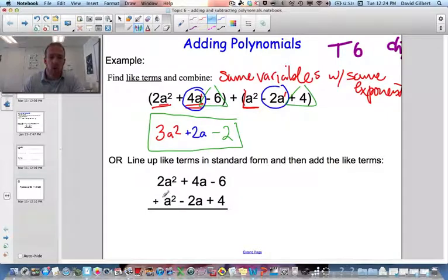So here you add 1 and 2 is 3a². 4 and negative 2 is 2a. And negative 2 and 4 is a negative 2.